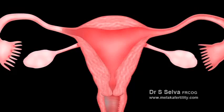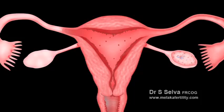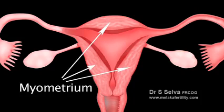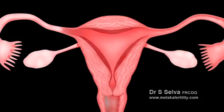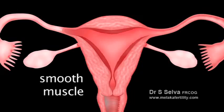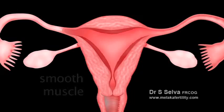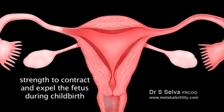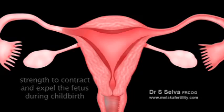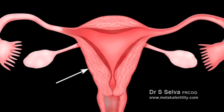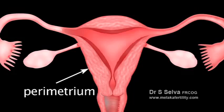Every month the endometrium thickens in preparation for potential pregnancy and sheds during menstruation if pregnancy does not occur. The middle layer of the uterus is known as the myometrium. It is mainly composed of smooth muscle cells which collectively give the uterus the strength to contract and expel the fetus during childbirth. The outermost layer of the uterus is the serosa, also known as the perimetrium.